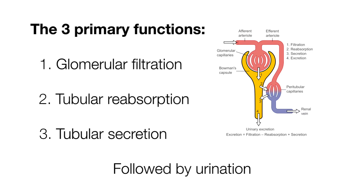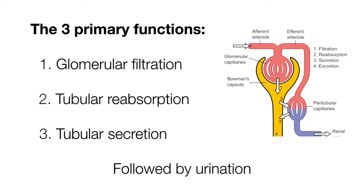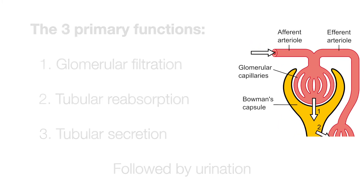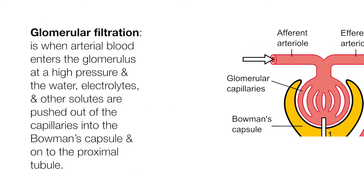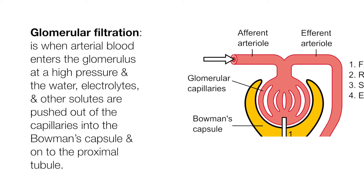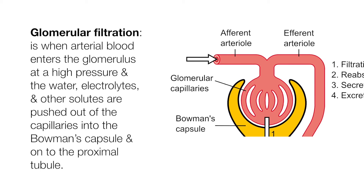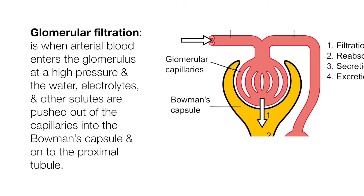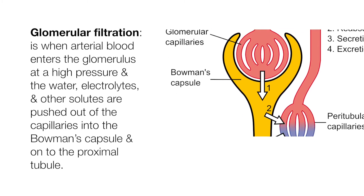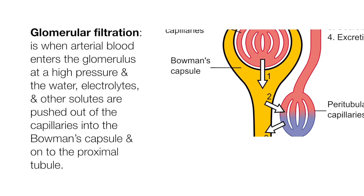The nephron has three primary functions: glomerular filtration, tubular reabsorption, tubular secretion, and urinary excretion. Glomerular filtration is when arterial blood enters the glomerulus at high pressure and water, electrolytes, and other solutes are pushed out of the capillaries into the Bowman's capsule and onto the proximal tubule.